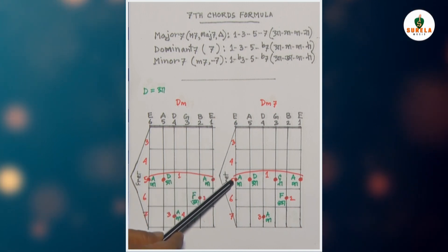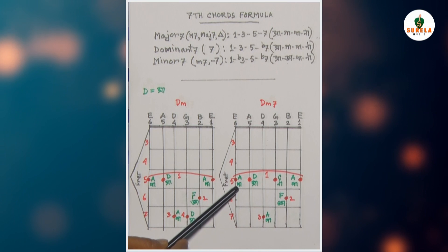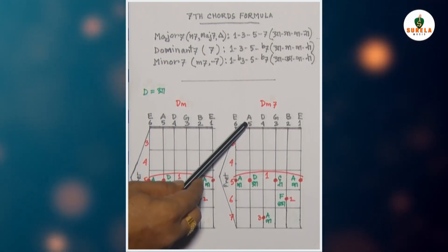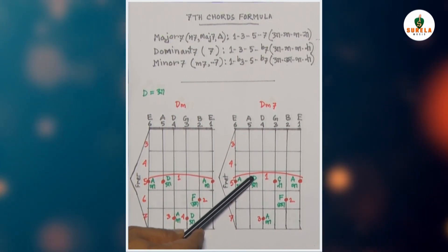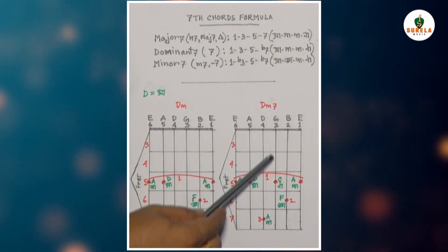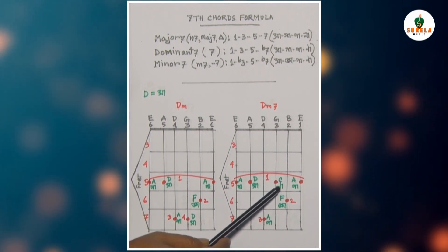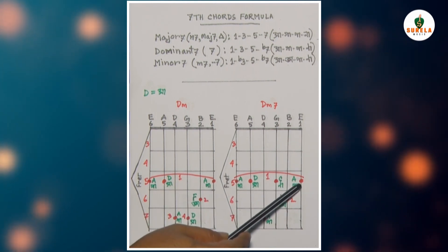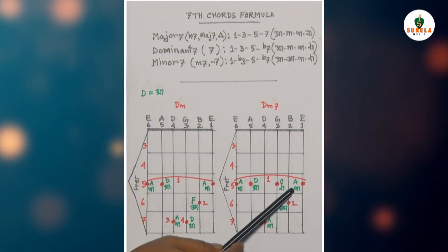6th string, 5th fret — A note, সা → পা। 5th string, 5th fret — note হচ্ছে D, সা। 3rd string, 5th fret — note হচ্ছে C, শর হচ্ছে কমোলনি। 1st string, 5th fret — note হচ্ছে A, শর হচ্ছে পা।